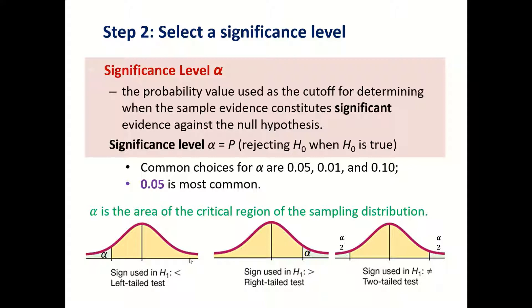Once your data falls into the critical region, we will say your sample statistic is significantly high or significantly low — your sample statistic will be significant. Remember, alpha is a very small value. The probability of your data being contained in the critical region should be really, really low, because otherwise it won't be significant. The common choices for alpha are 0.05, 0.01, and 0.1, with 0.05 being the most common.